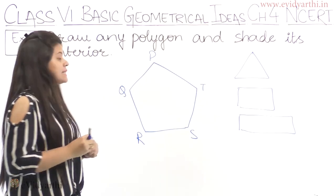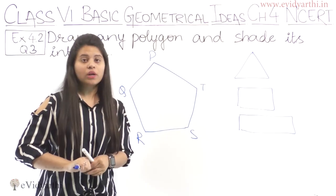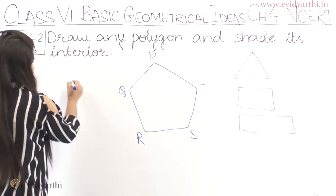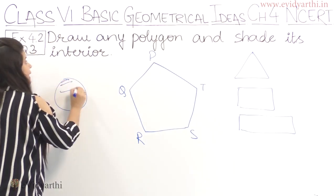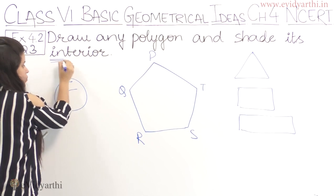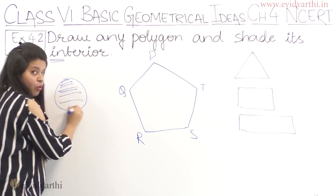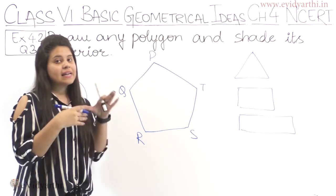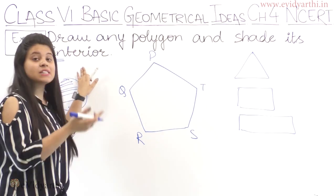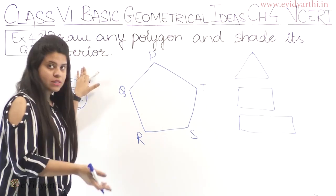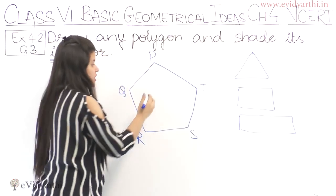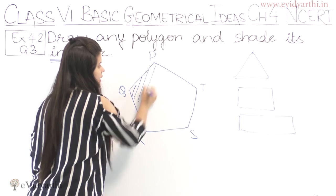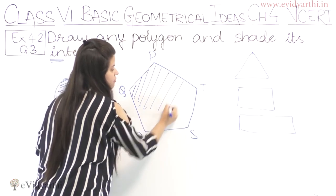Next we have to shade its interior. Interior kya hota hai? Any closed figure, like this figure. So interior means, interior mein 'in' aata hai, which means inside of it. So interior is inside of it and exterior is opposite of it, means outside. So we have to shade the interior. So this is the interior of this figure.